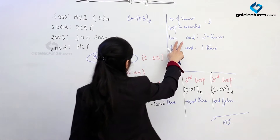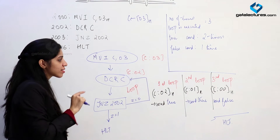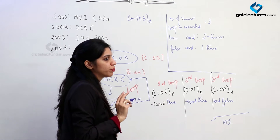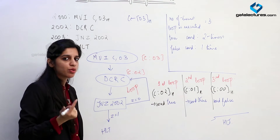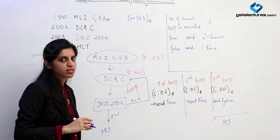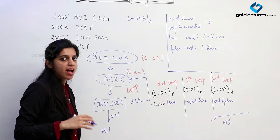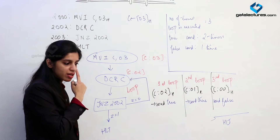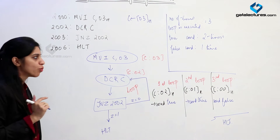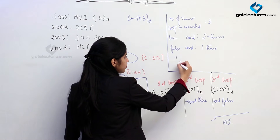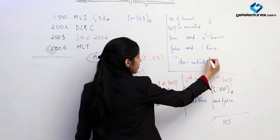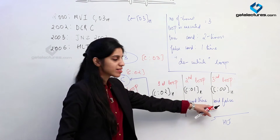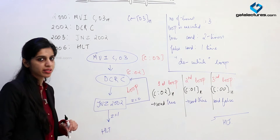If you have any idea of C language, there are two types of loops: do-while and while. In do-while, first you perform the task then you check the condition; in a while loop, first you check the condition then you perform the task. The idea we are using here is do-while - first we are performing the task (DCR C) then at the end we are checking the condition.